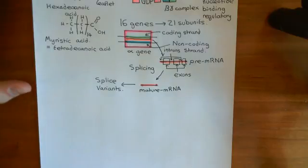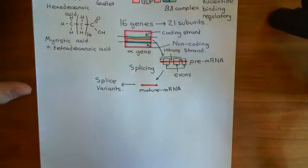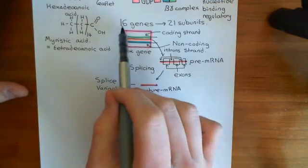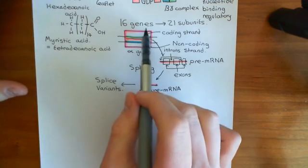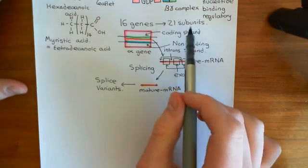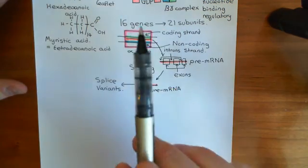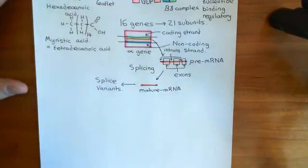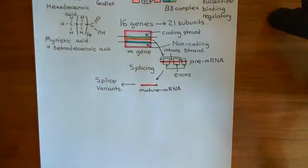We'll continue this discussion in the next video where we'll discuss the 16 different genes of the alpha subunits — though we won't go into all the splice variants — and then we'll also discuss the different beta and gamma subunits.